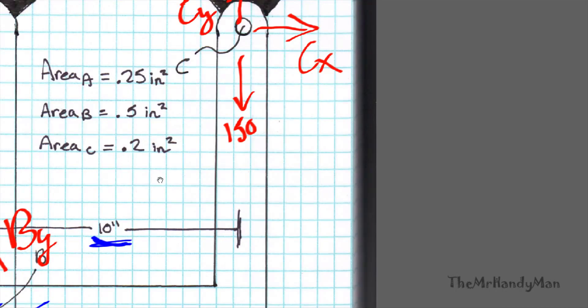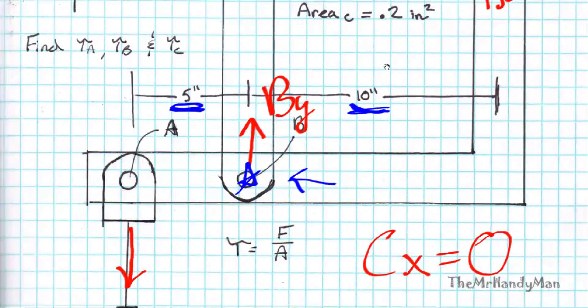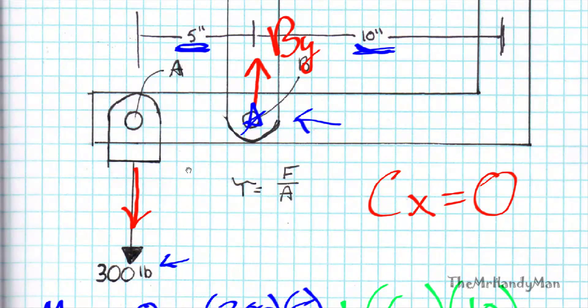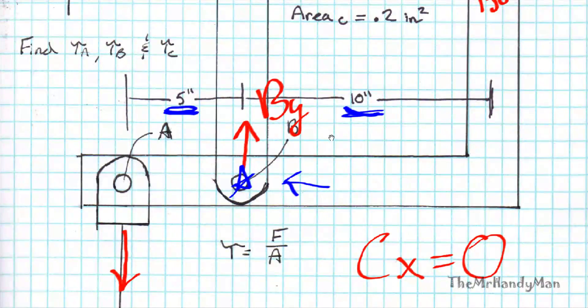So now, if you look at it, that Cy is pushing down at 150 pounds, and this 300-pound force is also pushing down. That means that By must be countering both of those at 450 pounds.